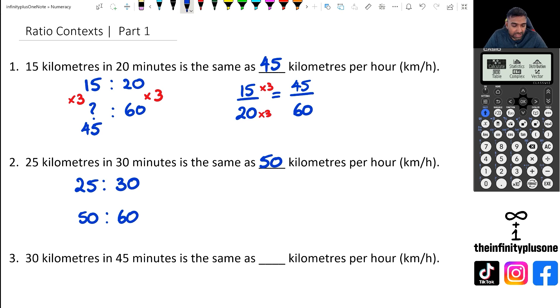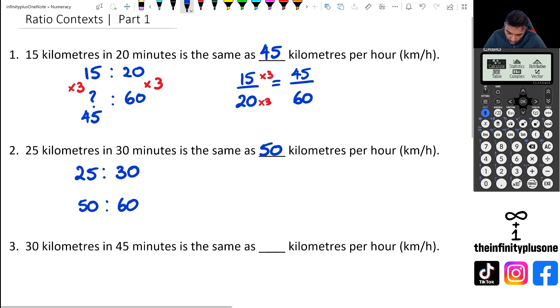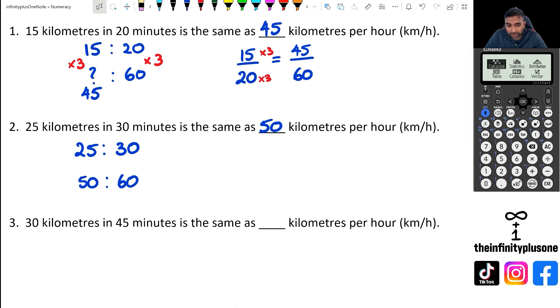But let's get to something like question three here. Now what we've got is 30 kilometers in 45 minutes. So we've got 30 to 45. And we want to try and figure out what is it going to be for 60 minutes. Now, again, a couple of ways of doing this. So you could work out how many kilometers you're covering in 15 minutes, and then multiply it by four because 15 times four is 60.